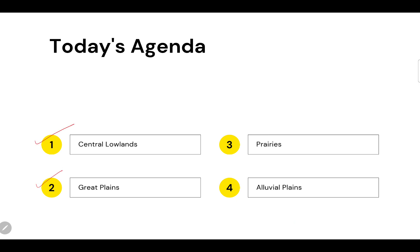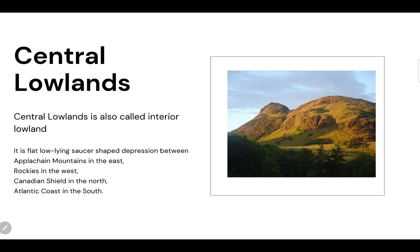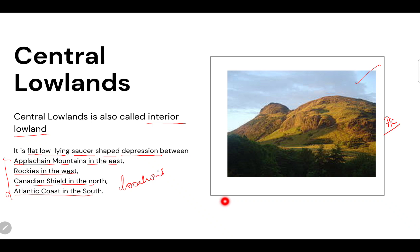Today's agenda: we will be discussing central lowlands, great plains, prairies, and alluvial plains. This is a picture of what central lowland looks like. Central lowland is also called interior lowlands. It is a flat, low-lying, saucer-shaped depression between the Appalachian Mountains in the east, the Rockies in the west, the Canadian Shield in the north, and the Atlantic coast in the south.